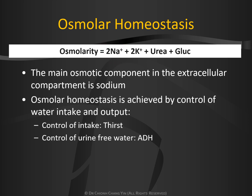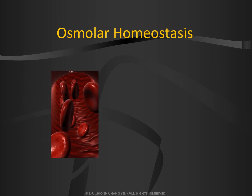Osmolar homeostasis is achieved by control of the water intake and output. Intake is controlled by the thirst mechanism, while the control of urinary loss of free water is by a single mechanism mediated by the antidiuretic hormone. How does osmolar homeostasis occur?